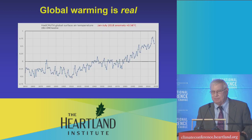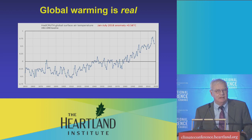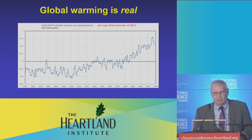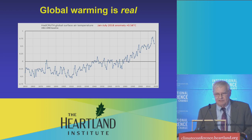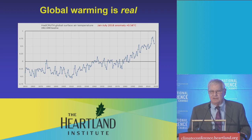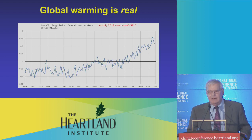The first part we have to acknowledge is that the surface temperature of the planet is warmer than it was 100 years ago. There are two warmings. The first one starts about 1910 and ends about 1945, and the second one begins around 1976 and appeared to have ended around 1998 or 1997 — until the data was changed, and I'll discuss that at length.